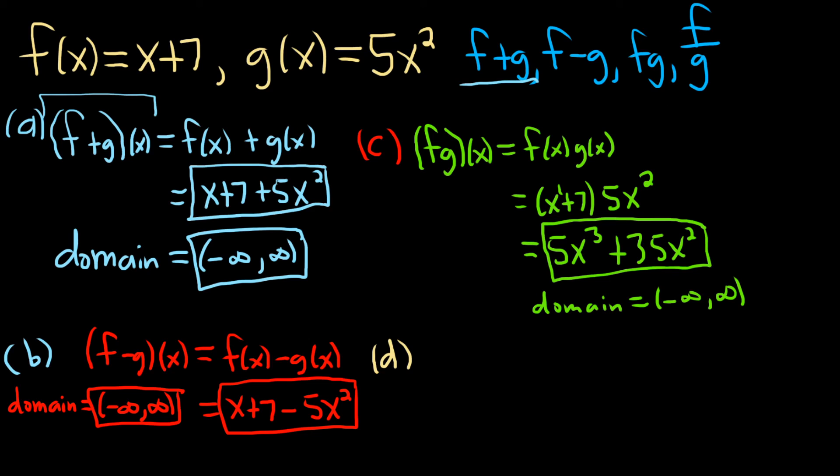And the very last case would be f over g. This one here, f over g. So that's defined as follows: f over g of x, and this is equal to f of x divided by g of x. So f of x is x plus 7, and then g of x is simply 5x squared.